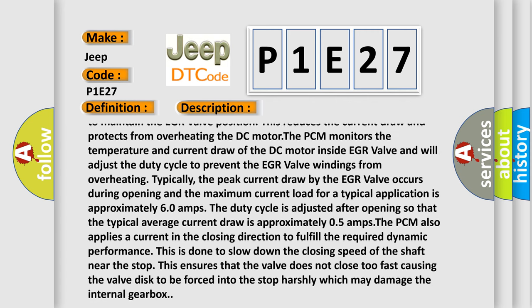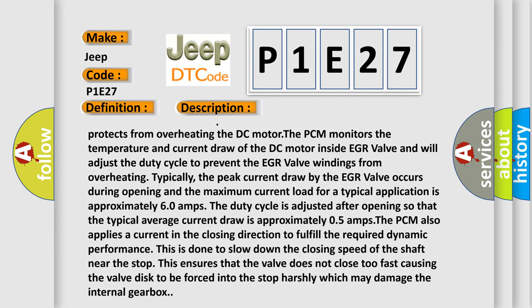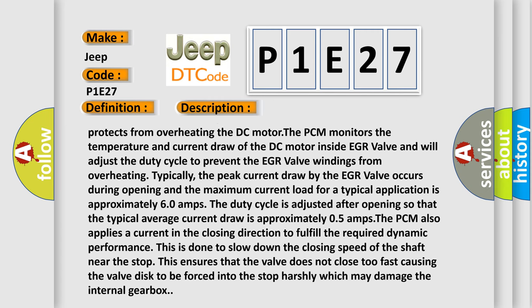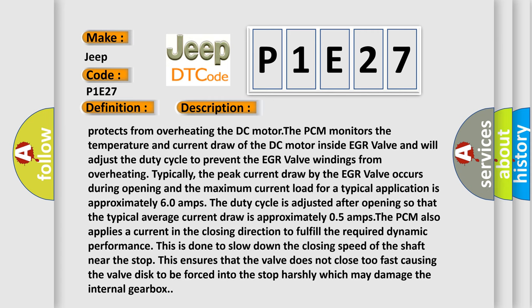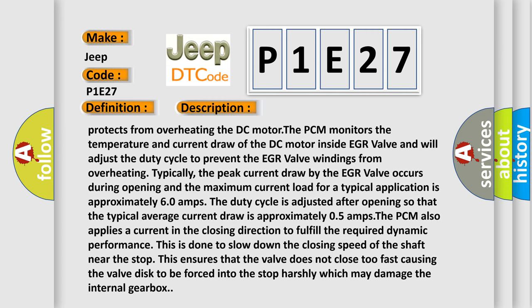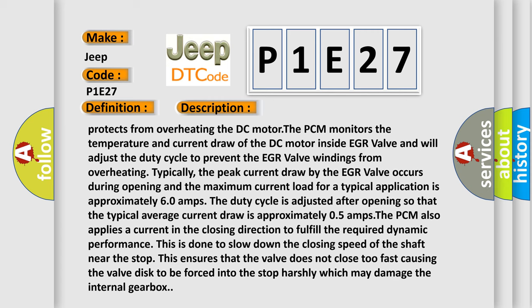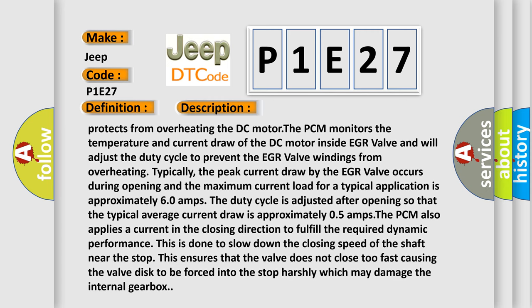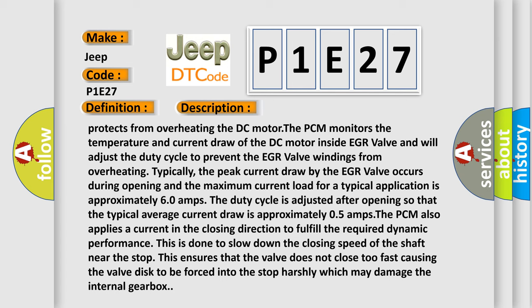The PCM also applies a current in the closing direction to fulfill the required dynamic performance. This is done to slow down the closing speed of the shaft near the stop. This ensures that the valve does not close too fast causing the valve disc to be forced into the stop harshly which may damage the internal gearbox.